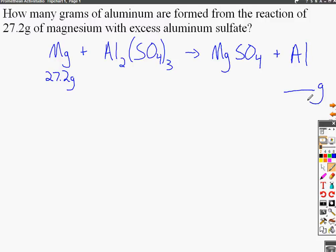The next step is to balance the equation. Balancing the sulfate requires a coefficient of 3 on the magnesium sulfate side, which also balances the magnesiums, and a coefficient of 2 for the aluminums. This gives us the balanced equation.